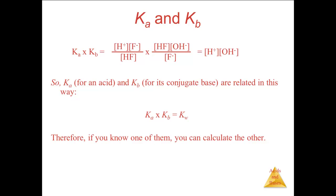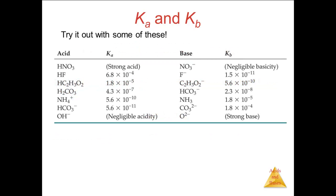This is why you will not find Kb for the conjugate base anion of any acid explicitly listed in most tables — it can easily be calculated from the value of Ka for the acid. Be careful, however, since this relationship holds for an acid-conjugate base pair. If you are working with a polyprotic acid, make sure you have the right acid-base combination. Here is a table that gives explicit values for Ka and Kb where they can be measured; you can verify that their products equal Kw.